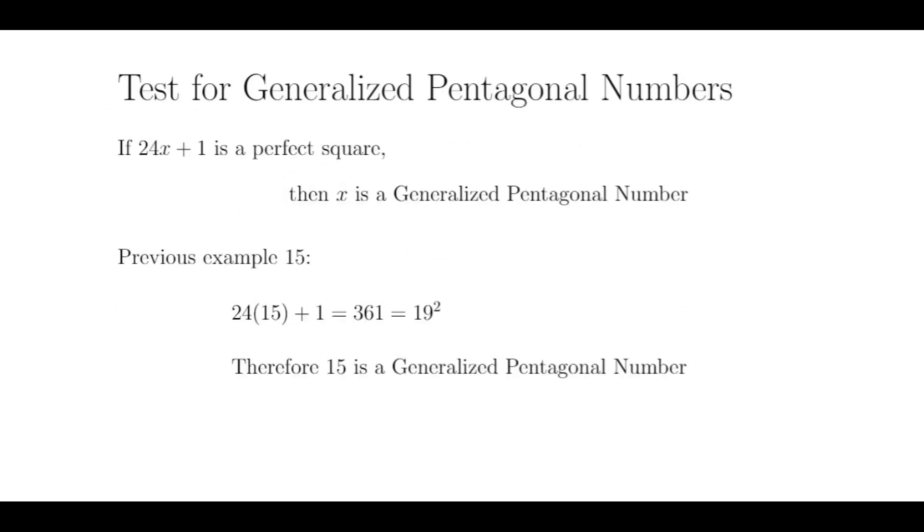As with the pentagonal numbers, we do have a test for the generalized pentagonal numbers that is much easier to calculate. Given any integer n, n is a generalized pentagonal number if and only if 24 times n plus 1 is a perfect square.